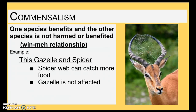Then we have commensalism. This is when one species benefits and the other species — it doesn't really affect them. This is a win-meh situation. For example, we have this gazelle and the spider. The gazelle doesn't seem to care that there is a ton of spider webs all over its head, although I think I would care if I were it. But the spider gets a benefit — it gets to move around, and maybe this setup with the web helps it catch more insects. It's a win-meh relationship: one wins, one doesn't care.